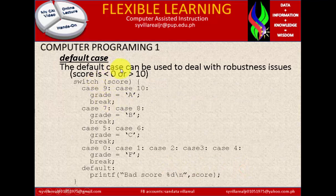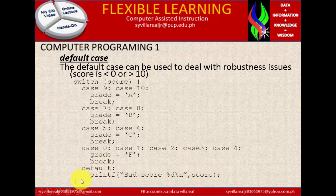The default case. Default case can be used to deal with robustness issue. When we said default, it should be not on the selection. So switch score. Case 9, case 10, grade A, break. Case 7, case 8, grade B, break. Case 5, case 6, grade C, break. Case 0, case 1, case 2, case 3, case 4, grade F, break. Default, print F, bad score. And it will display this score.